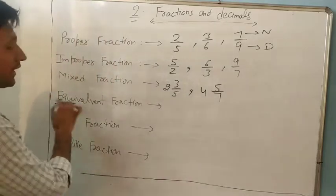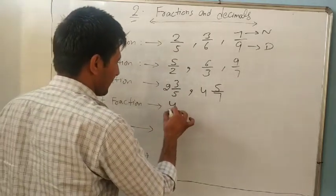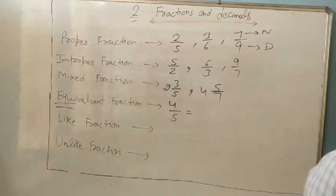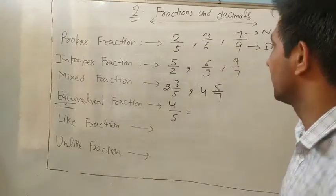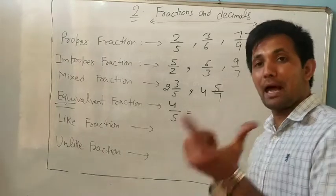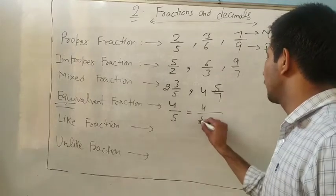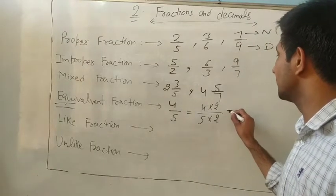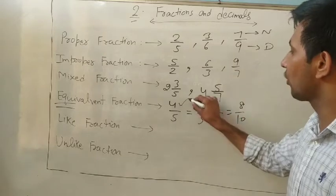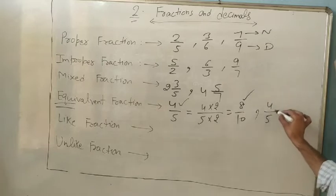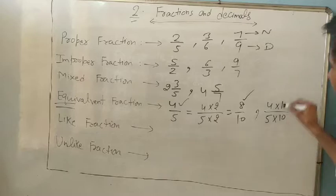An equivalent fraction means equal fractions. For any fraction, like 4/5, there are countless equivalent fractions. One property of equivalent fractions is: multiply the numerator and denominator by the same number. For example, 4/5 multiplied by 2/2 gives 8/10, so 4/5 and 8/10 are equivalent fractions. You can also multiply by 10 to get 40/50 — the same number must multiply both numerator and denominator.